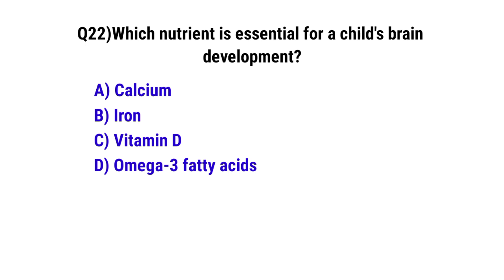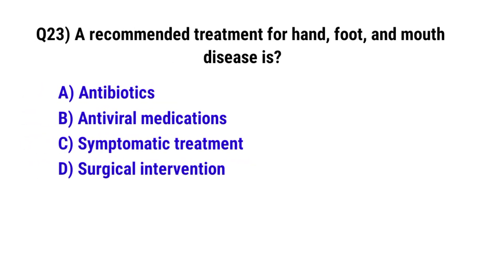Question 22: A common symptom of asthma in children — what is essential for a child's brain development? The correct option is D: Omega-3 fatty acids. Question 23: A recommended treatment for hand, foot and mouth disease — the correct option is C: Symptomatic treatment.